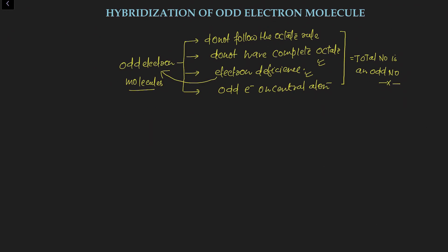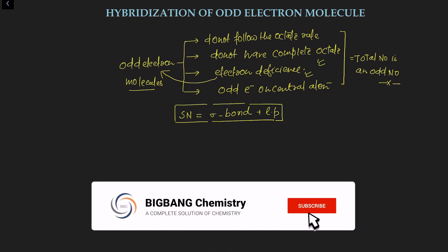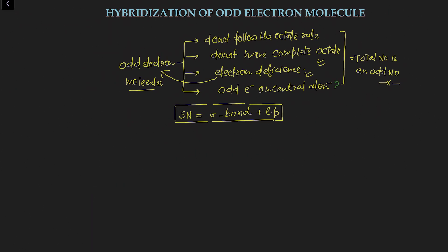For the calculation of hybridization, as I discussed in the first two videos, we must know about the steric number. The steric number formula is: number of sigma bonds plus number of lone pairs of electrons. If this number equals 3, 4, 5, or 6, accordingly we can decide the hybridization of the odd electron molecule. But the question remains: what will we do with the odd electron, and how and when will we include this odd electron in hybridization?